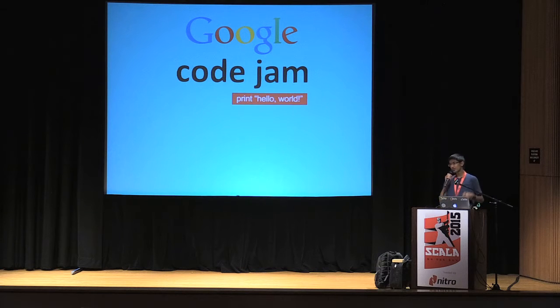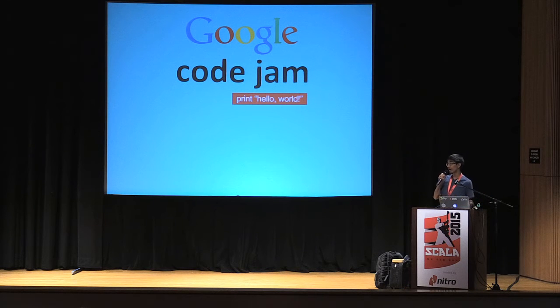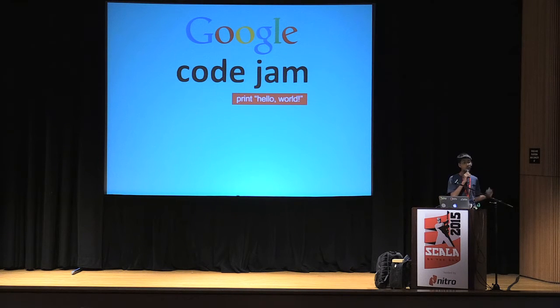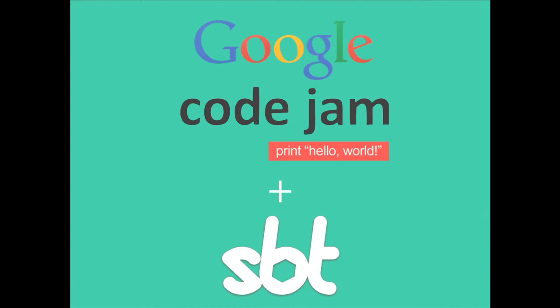With Google Code Jam, you're allowed to pick whichever language you'd like to use to solve the problems, so I chose Scala. Google Code Jam lets you run your algorithm on your local machine with a downloaded dataset and then submit your source files as well as the solution to Google servers. But this process can be quite tedious, so I wrote an SBT plugin to automate submission of solutions to Google Code Jam.